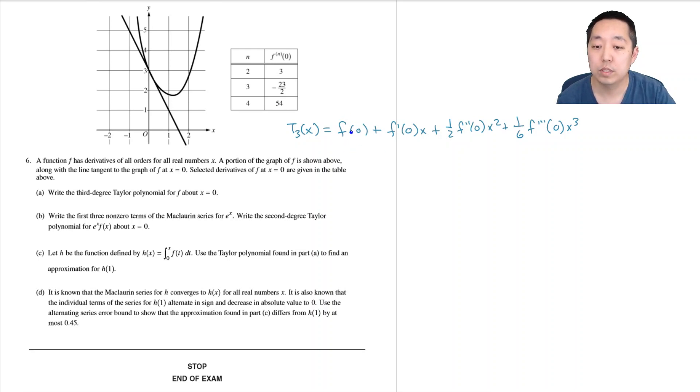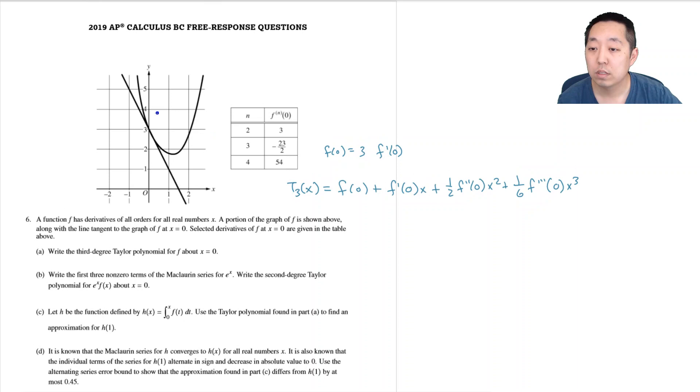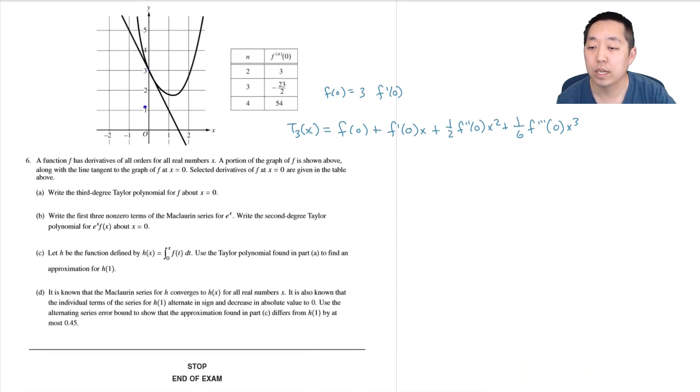f(0), I can look on the graph, it's equal to three. f'(0) is the slope at this point. This slope looks like it goes down two over one, so negative two. The second derivative and third derivative are given right here.